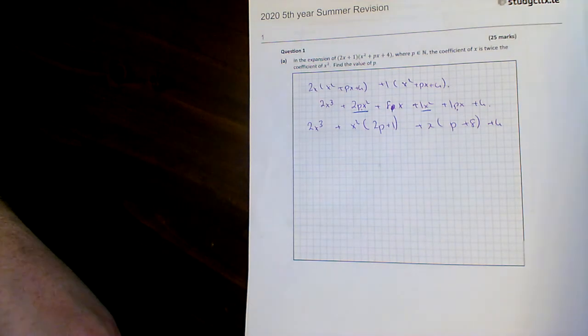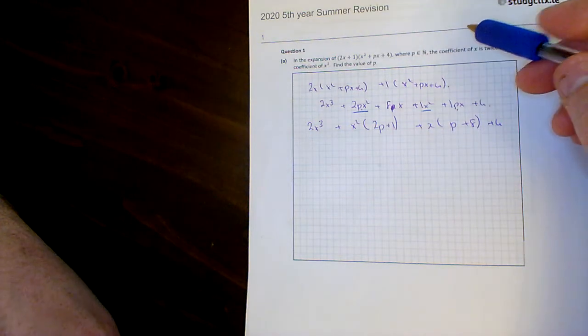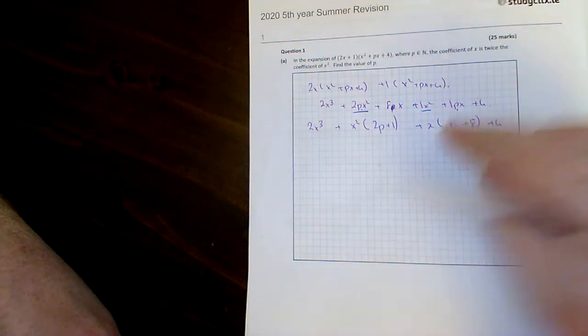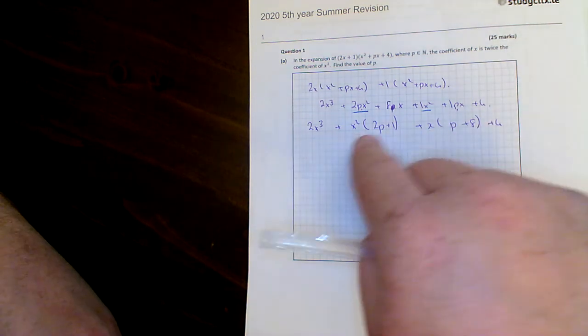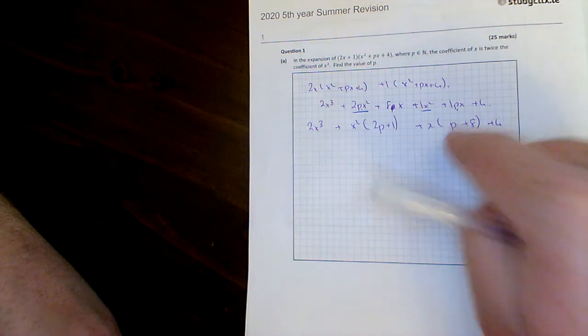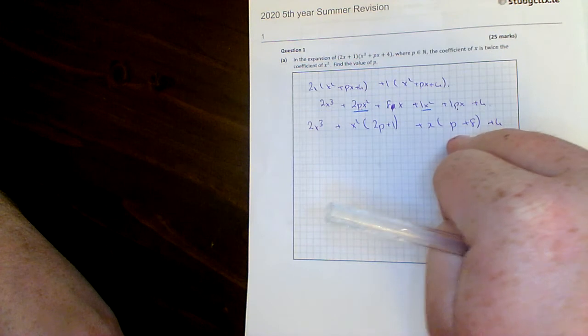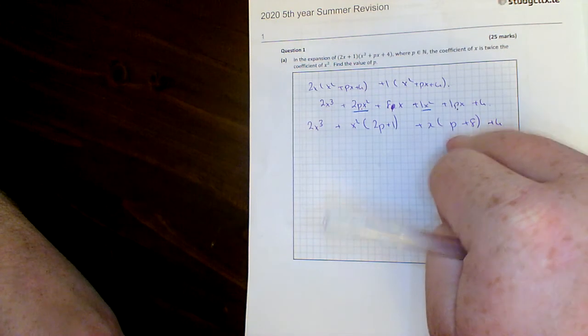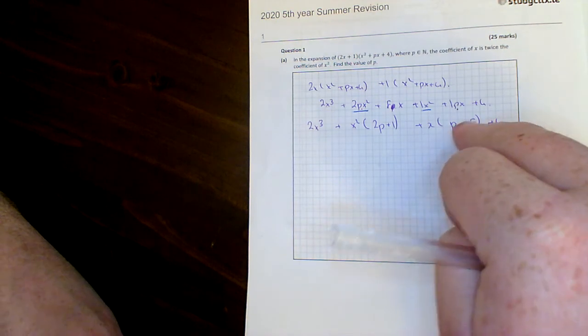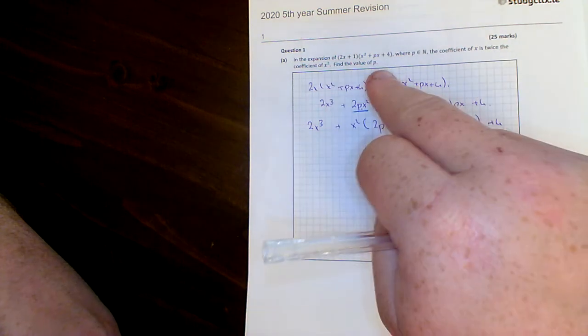Now let's go back and read the question. The coefficient of the x is twice the coefficient of the x squared. What does that mean in English? The coefficient, that means the number that goes in front. So the number that goes in front of it is my p plus 8 in front of the x. And then the 2p plus 1 is in front of the x squared. Twice the x squared coefficient would be the same as the x coefficient.